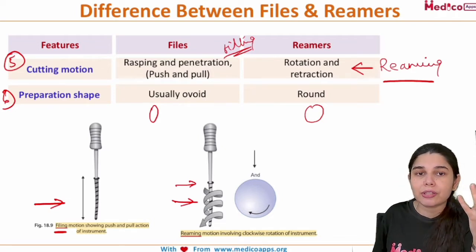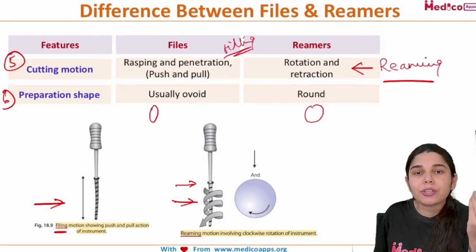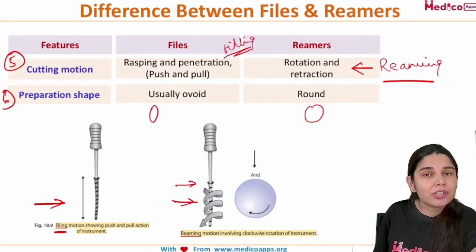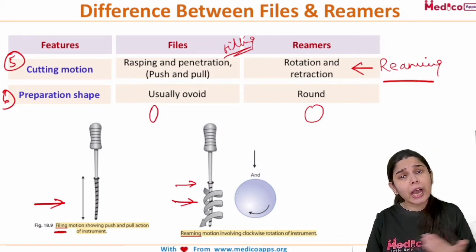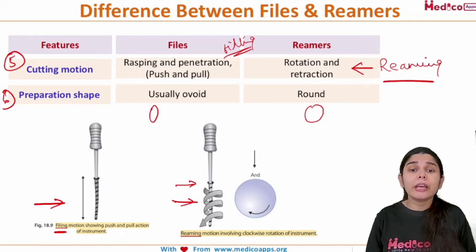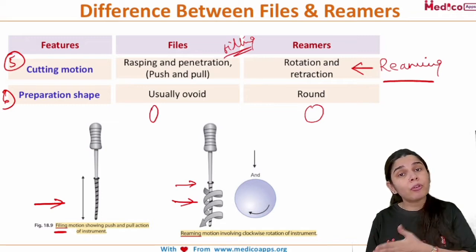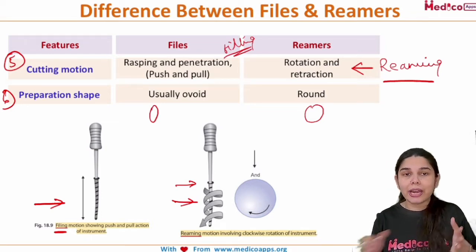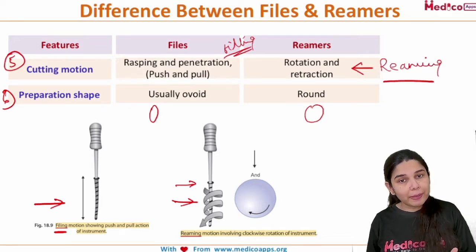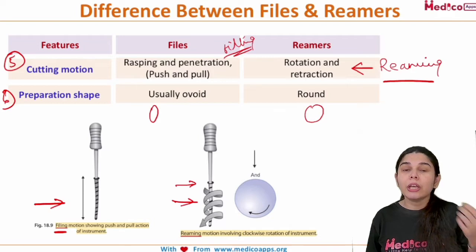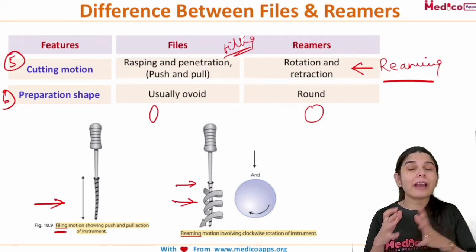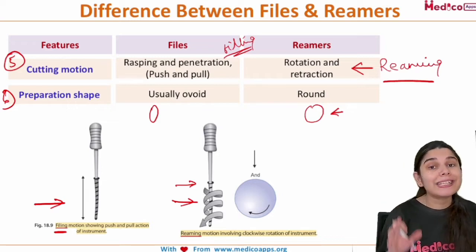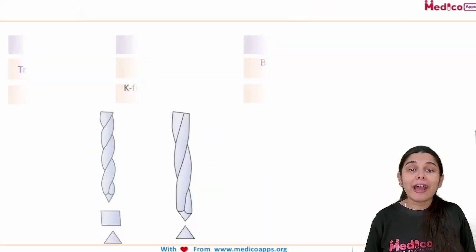So we have discussed six differences. First: cross section. Second: area of cross section. Third: number of fluids — more in files, less in reamers — with the shape of the shaft affected by the number of fluids. Fourth: flexibility of files is less with more risk of fracture, and less in reamers. Fifth: cutting motion — rasping and penetration, the push and pull filing motion for files; rotation and retraction, the reaming motion for reamers. Sixth: preparation shape — ovoid for files, round for reamers.